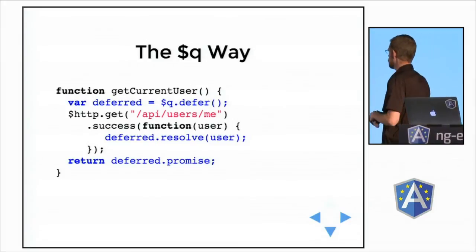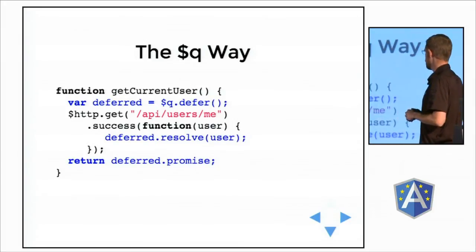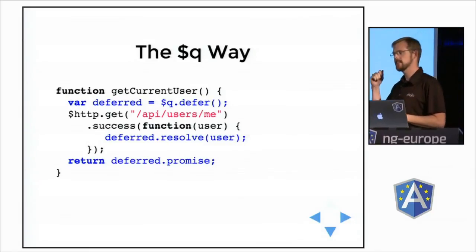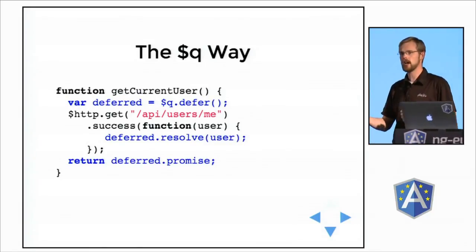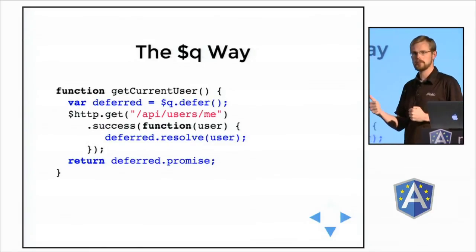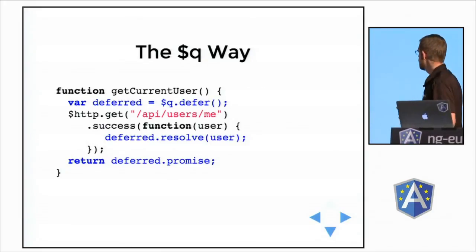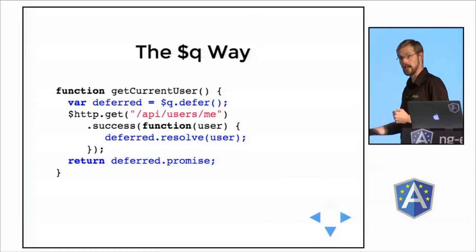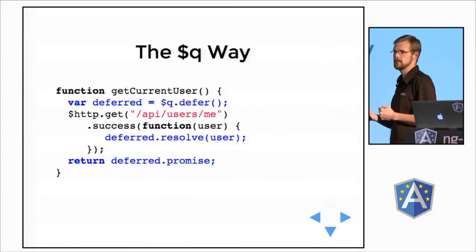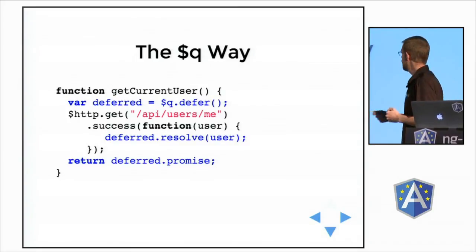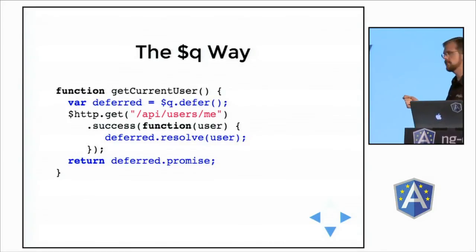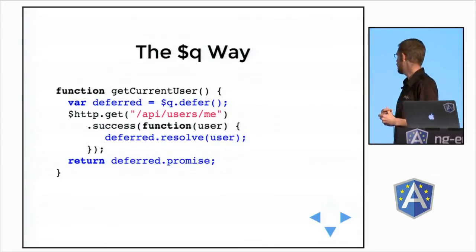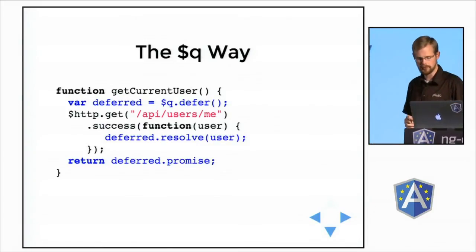Here's how that same code would look if I were porting it to $q. Function getCurrentUser — first thing first, I declare a deferred object by asking the queue service to create a deferred object. Then I return that deferred's promise. Then, when the operation completes later, I call deferred.resolve and pass in the object.